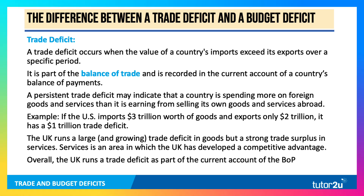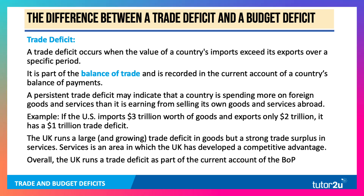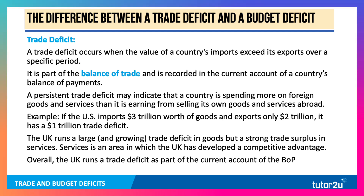The opposite is a country that runs a trade surplus. The UK runs a large and growing trade deficit in goods, but it also has quite a strong trade surplus in services. Services — from creative to financial services — is an area of the UK economy where they've developed a competitive and scaled advantage. But overall, the UK runs a trade deficit as part of the current account.